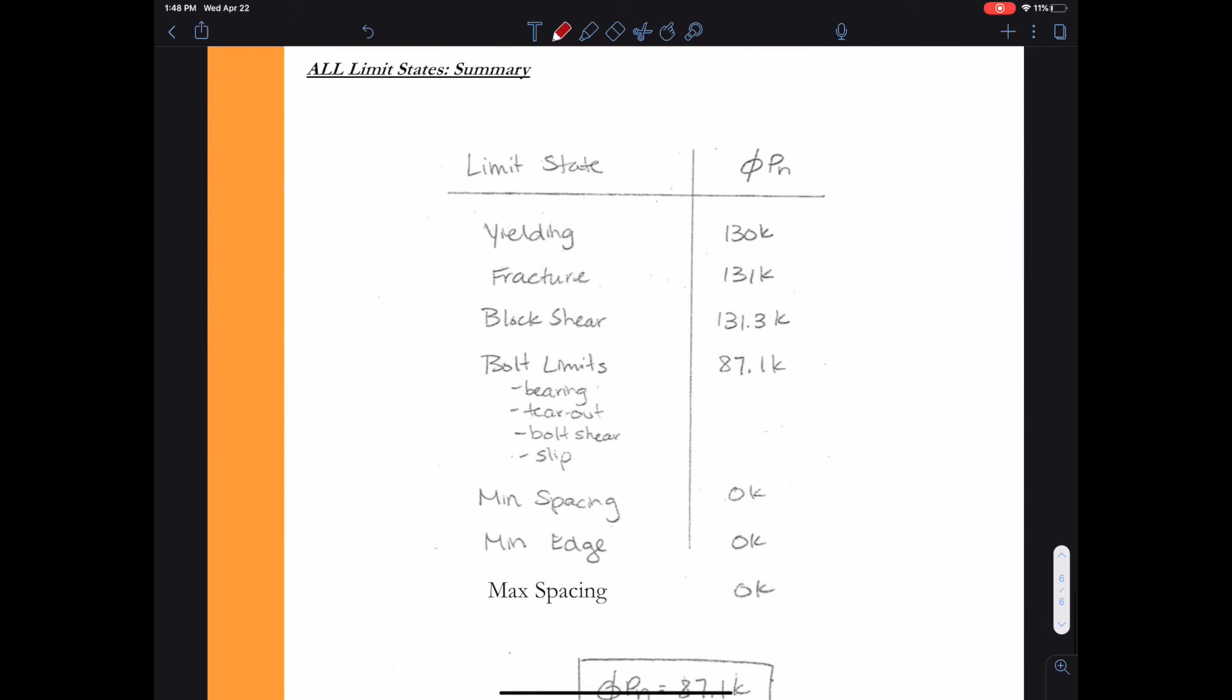I add that to all the other limit states I considered, yielding, fracture, block shear. Now my bolt related limit states includes slip. And I see that the overall, the bolt limit state controls the design for this connection.